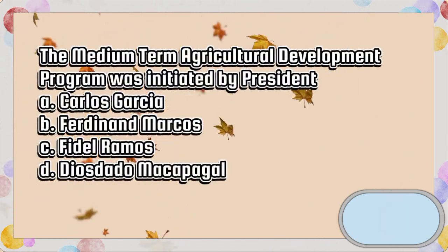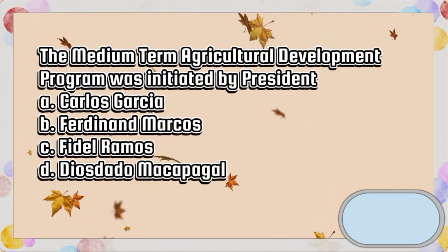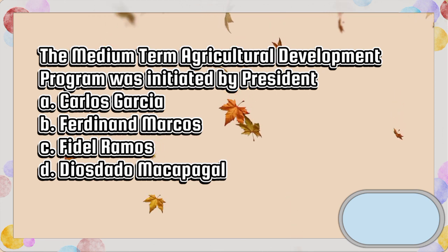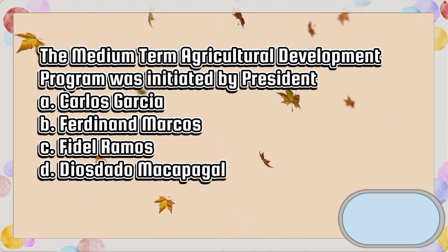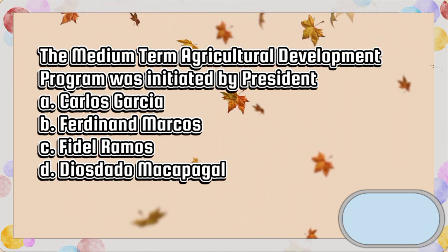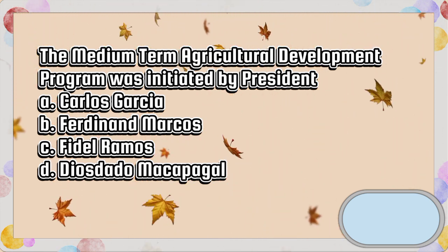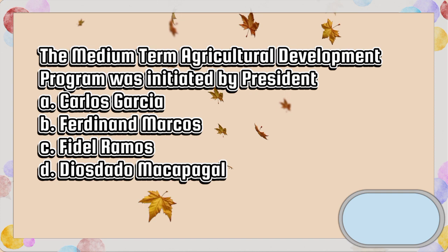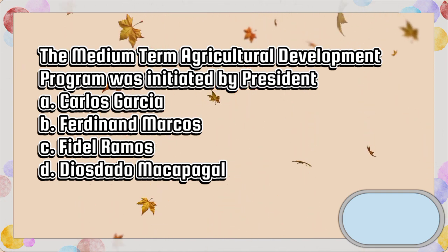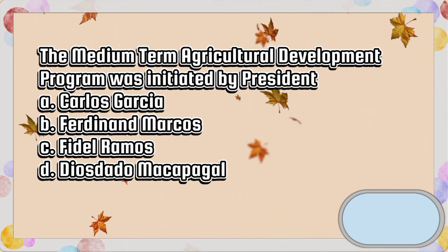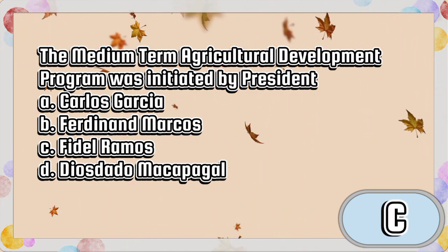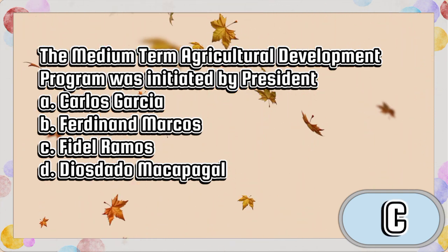The medium-term agricultural development program was initiated by President. A. Carlos Garcia. B. Ferdinand Marcos. C. Fidel Ramos. D. Diosdado Macapagal. The answer is letter C.